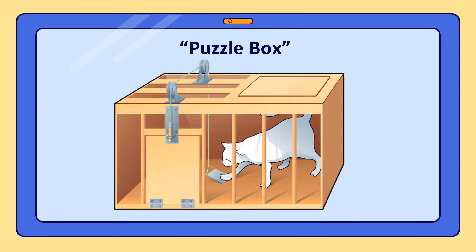A complete record was made of the cat's behavior during each trial. In the beginning, the cat made many random movements like biting, clawing, and dashing. Gradually, in subsequent trials, the cat reduced the incorrect responses as it learned to manipulate the latch as soon as it was put in the box. This experiment revealed that random movements decreased gradually — as the trials increased, the errors decreased. Eventually, the cat could open the door with zero error.